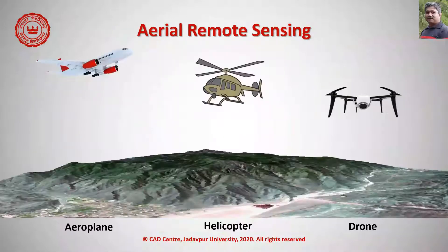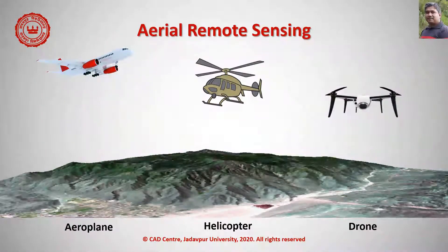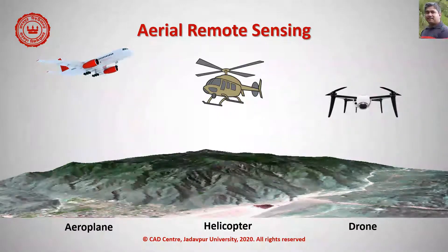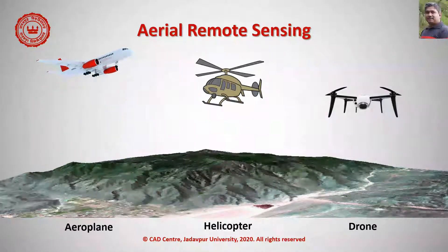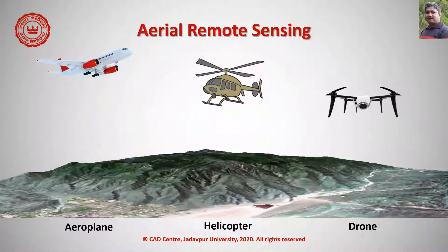Aerial remote sensing, or aerial photography, was the first widely used method of remote sensing. It is the technique of capturing imagery from an aerial platform. These images are used for obtaining information about objects, areas, or phenomena. This data is used in GIS as a background for other data to provide spatial context and to aid interpretation.